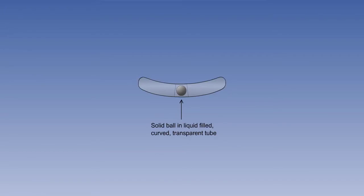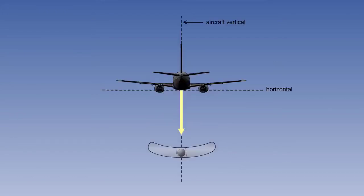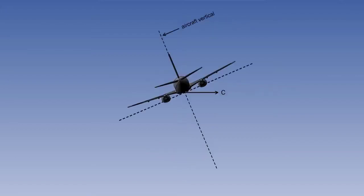The liquid in the tube damps out any unwanted oscillations of the ball. In straight and balanced flight, gravity will keep the ball centralised in the lowest part of the tube between the two etched lines. In a turn, the ball will be subject to an additional centrifugal force, which we will call C.